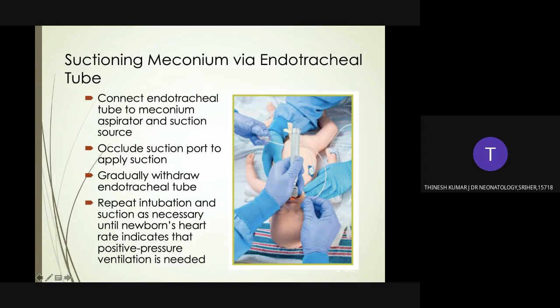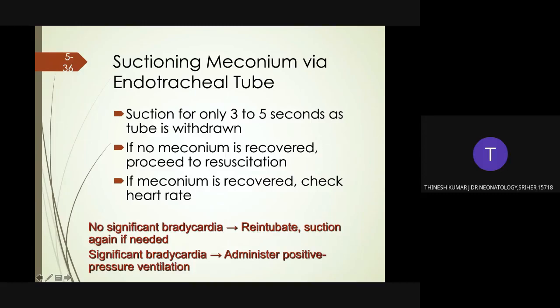How to suction meconium via the endotracheal tube: connect the endotracheal tube to the meconium aspirator and suction source. Occlude the suction port to apply suction while gradually withdrawing the endotracheal tube. Repeat intubation and suction as necessary until no meconium is recovered or the newborn's heart rate indicates that positive pressure ventilation is needed. Suction for only 3 to 5 seconds as the tube is withdrawn. If no meconium is recovered, proceed to resuscitation. If meconium is recovered and there is no significant bradycardia, re-intubate and suction again.